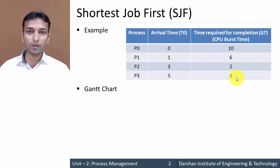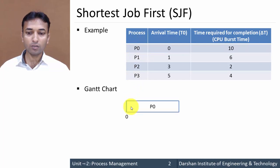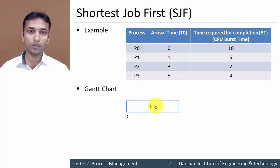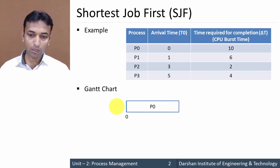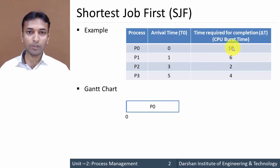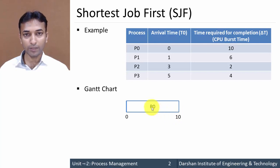Now first of all we will draw the Gantt chart. Initially at time 0, only one process arrives — process P0 — so the first turn is given to process P0. It is non-preemptive, so the process will not be forcefully stopped. Process P0 requires 10 milliseconds to complete its execution, so up to 10 milliseconds process P0 executes and at 10 milliseconds process P0 is completed.